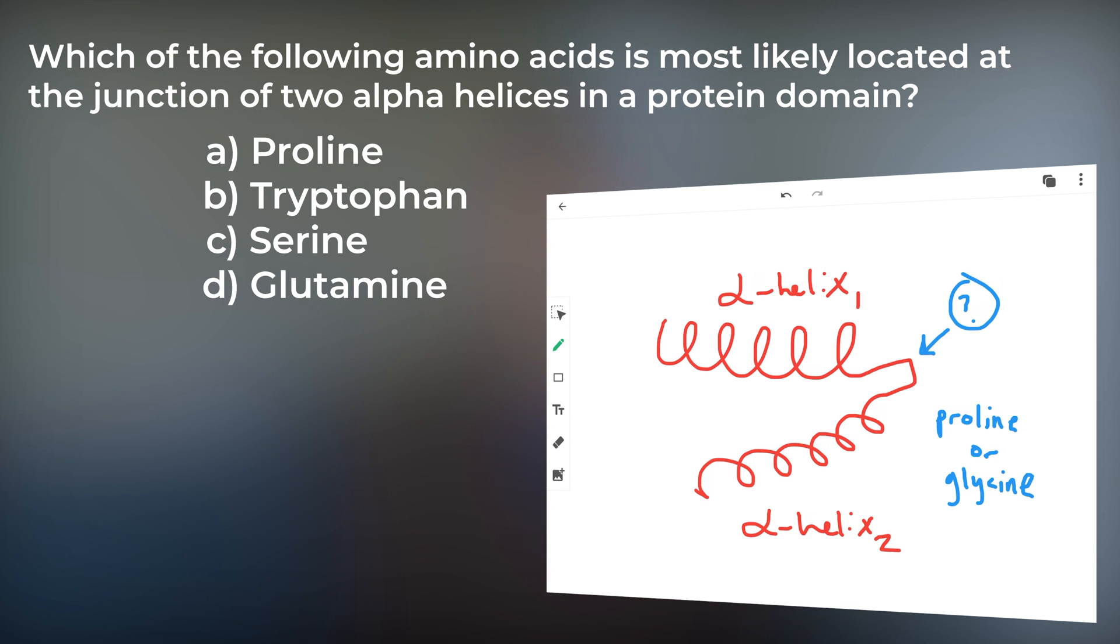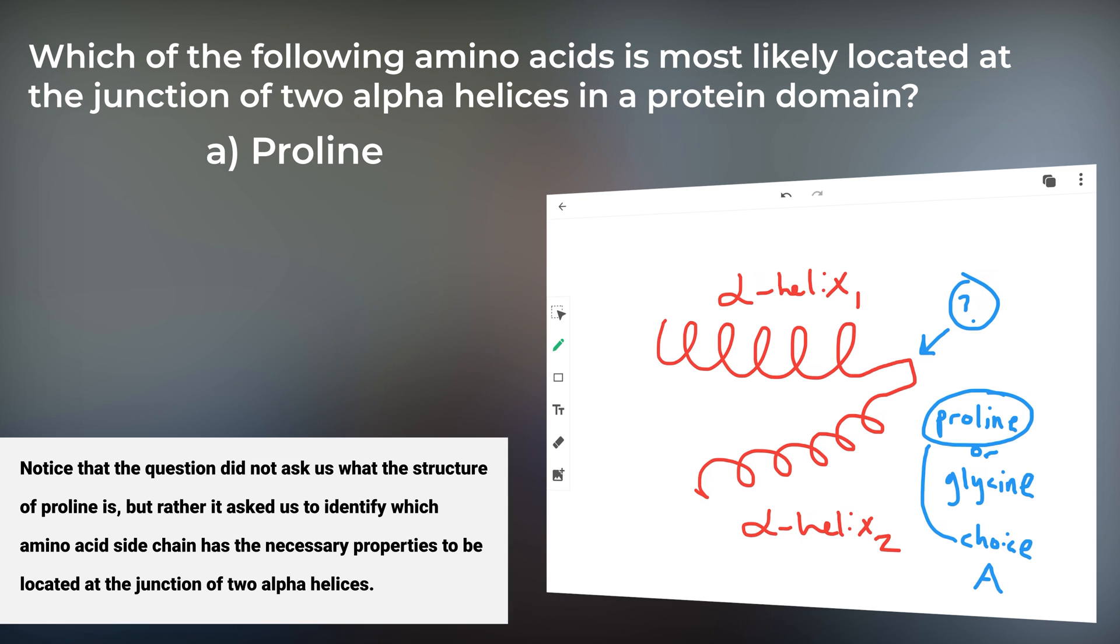So answer choice A is correct. Notice that the question did not ask us what the structure of proline is, but rather it asked us to identify which amino acid side chain has the necessary properties to be located at the junction of two alpha helices.